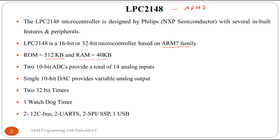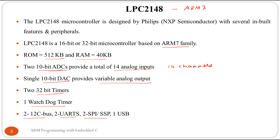This microcontroller has two 10-bit ADCs which provide a total of 14 analog inputs, so we can connect up to 14 analog sensors or inputs. It has a single 10-bit DAC, which is a digital-to-analog converter providing variable analog output. There are two 32-bit timers and one watchdog timer. For serial communication, it includes two I2C buses, two UARTs, two SPI/SSP interfaces, and one USB communication protocol.